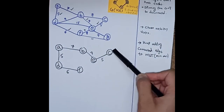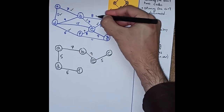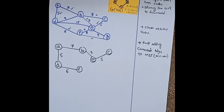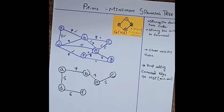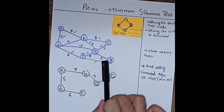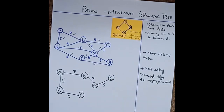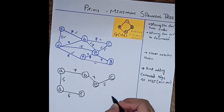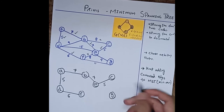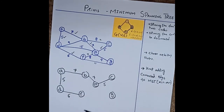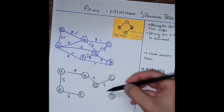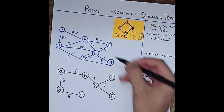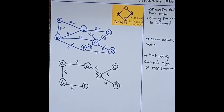Now we have six vertices. C is connected to B, but we cannot consider this edge as it would form a cycle — the property of a spanning tree is that no cycle is formed. So from these six vertices, we choose the minimum possible path. E to G has weight 9, and F to G has weight 11. The minimum is 9, so we select E to G with weight 9. The spanning tree is now constructed.